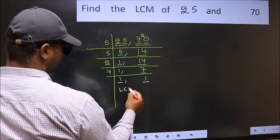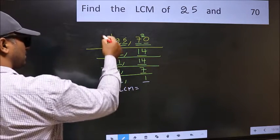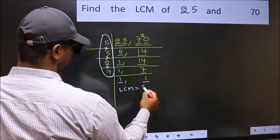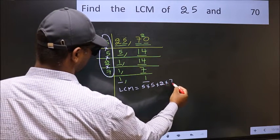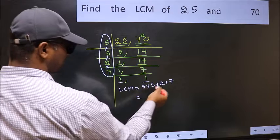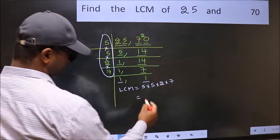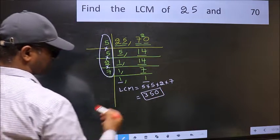So our LCM is the product of these numbers. That is 5 into 5 into 2 into 7. When we multiply these numbers, we get 350 is our LCM.